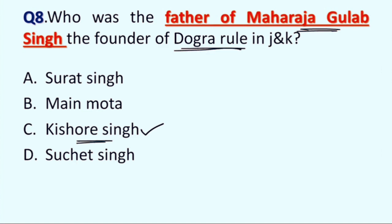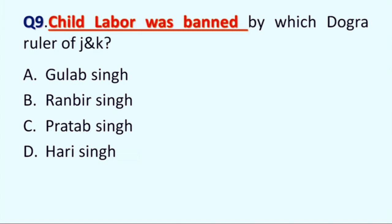Next question is: child labour was banned by which Dogra ruler in Jammu and Kashmir? Option A: Gulab Singh, B: Ranbir Singh, C: Pratap Singh, and D: Hari Singh. Correct answer is Hari Singh. Hari Singh banned child labour in Jammu and Kashmir.